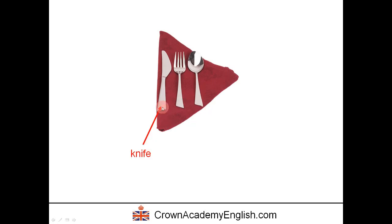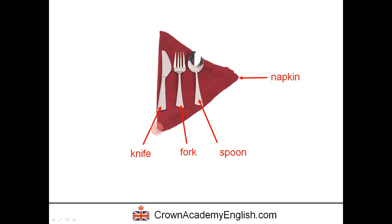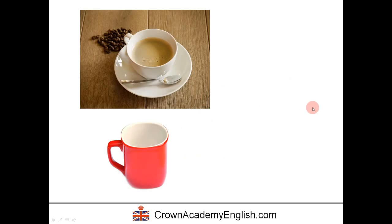This is a knife, this is a fork, and this is a spoon. And this red thing is called a napkin. We use a napkin to wipe our hands and face after we have finished eating.